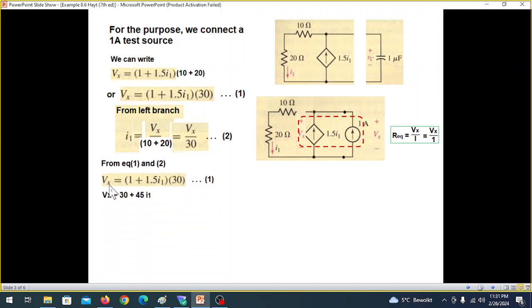So first of all, this was the equation 1. If we open it, we get this equation. And then now we'll put I1 is Vx over 30 from equation number 2 here.